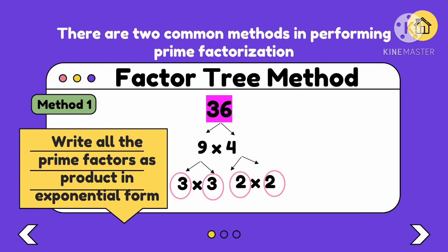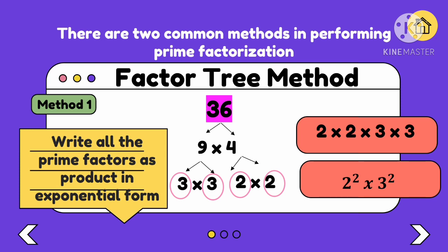We can now write all the prime factors as product in exponential form. Write all the prime factors we got: 2 times 2 times 3 times 3. When writing as product of prime factors, start with the smallest number going to larger numbers. When we express 2 times 2 times 3 times 3 in exponential form, it becomes 2 raised to the second power or 2 squared times 3 squared. 2 is the base and the small 2 is the exponent. The exponent dictates how many times we wrote the base. It's 2 raised to the second power because we wrote the base twice. The base 3 appeared twice, so 3 raised to the second power.